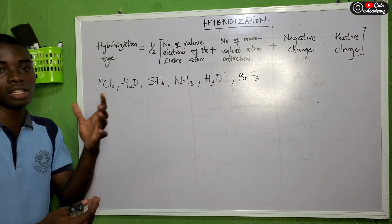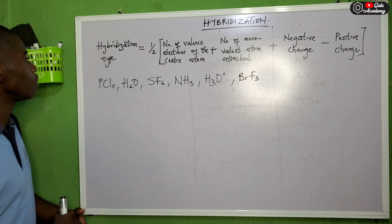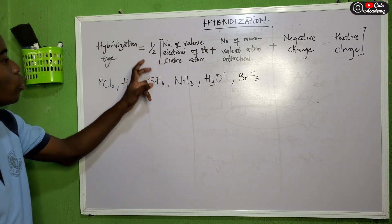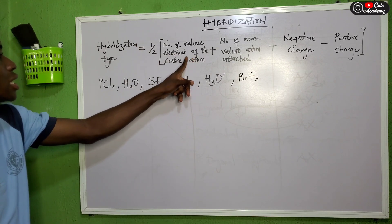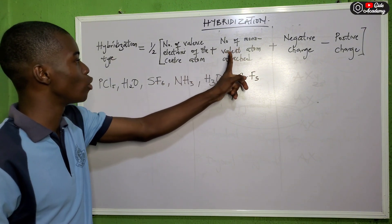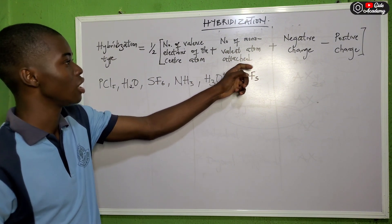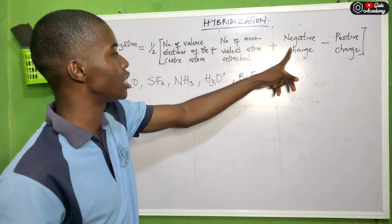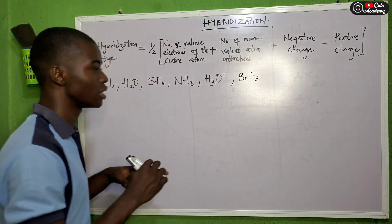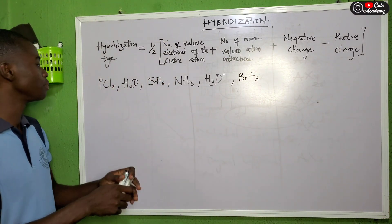To determine the hybridization of a compound, use the formula: H = ½ × (number of valence electrons of the center atom + number of monovalent atoms attached + negative charge − positive charge).